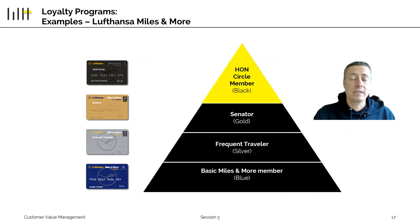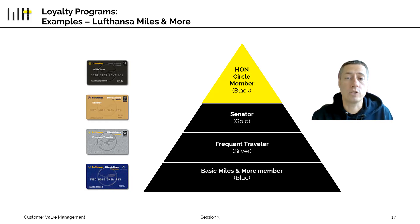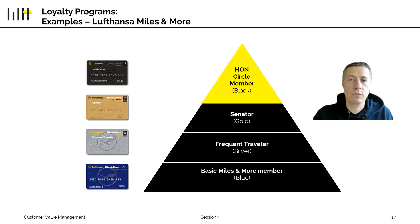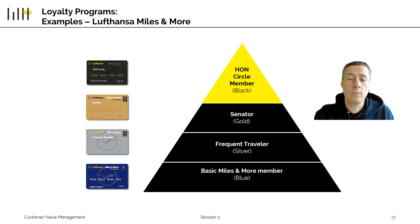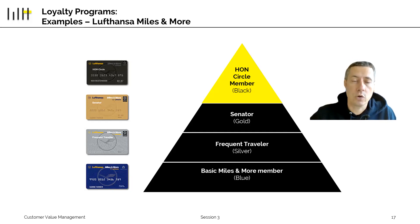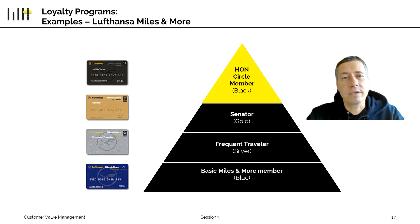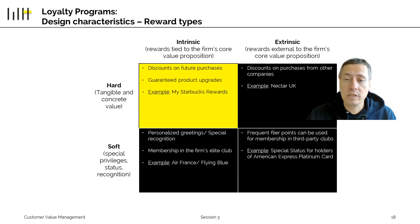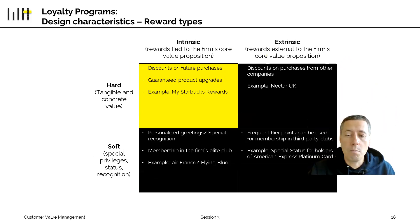I mentioned that loyalty programs have different groups — these are called tiered loyalty programs, and many companies use them. Take Lufthansa as an example: you have basic members in blue, frequent travelers in silver, senators in gold, and the HON Circle in black. You may wonder why we have all these different levels and all these different benefits.